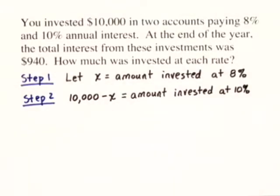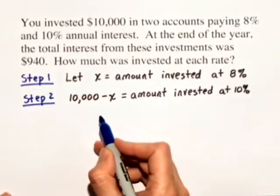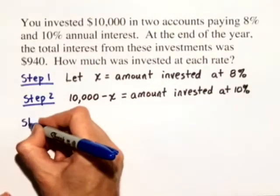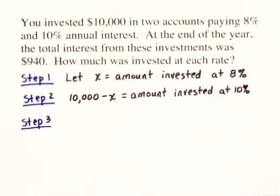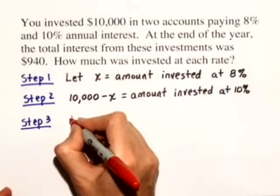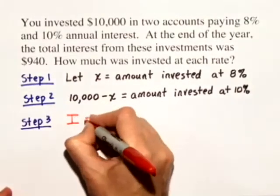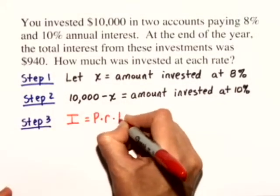Now we're ready for step three. In step three, we're going to use the information in step one and two to write an equation in terms of X. Now, in order to write this equation, we have to keep in mind one thing. We know the formula for interest. Interest is equal to the principal invested times the rate times the time.